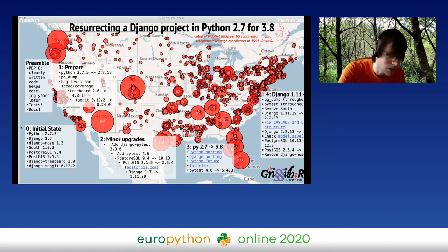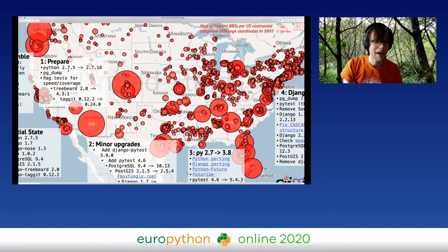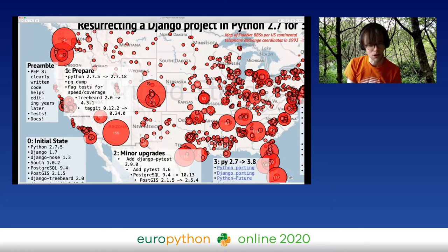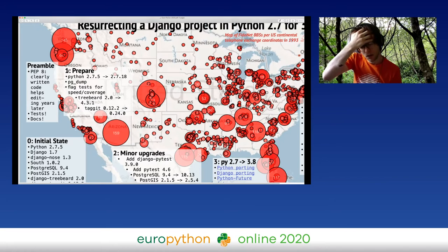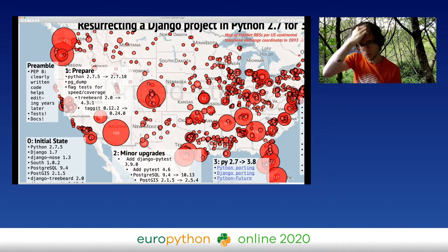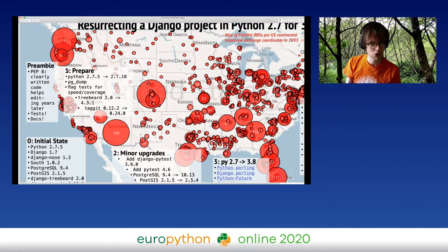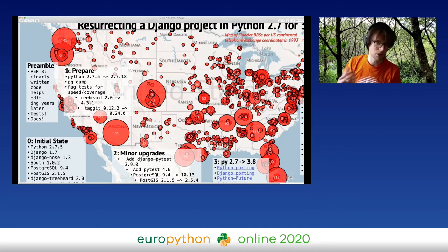That was the initial state — zero. To prepare for the process, the first thing I did was update Python 2.7.5 to 2.7.18 — that was the easy part. Originally the project was in virtualenv and I've now shifted to doing most stuff in pipenv. Making that first shift to the latest Python 2.7 was step one. Then the PostgreSQL dump — not providing a live service, that was my way of having a safe space to return to. I put timestamps on all the dumps as part of the file names to keep track of when I made them.